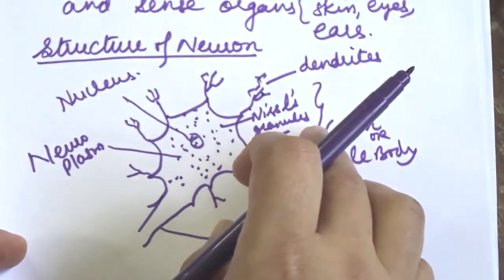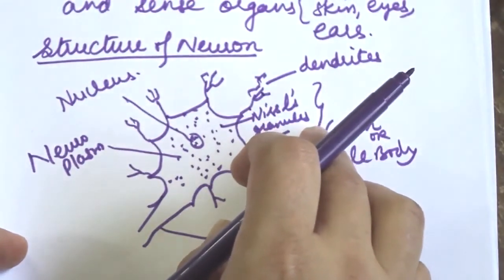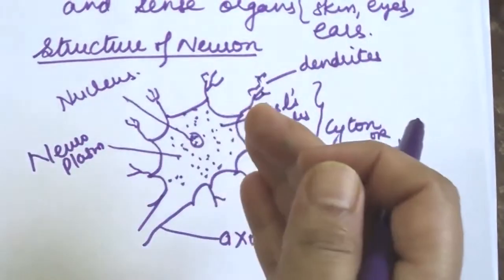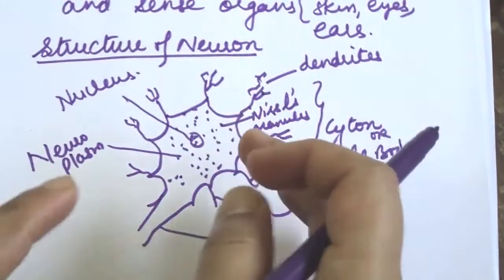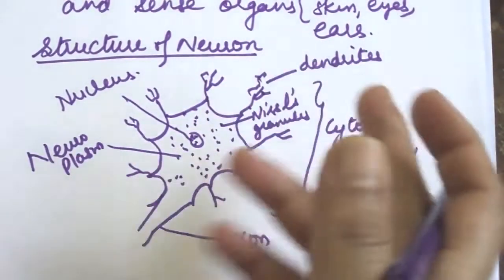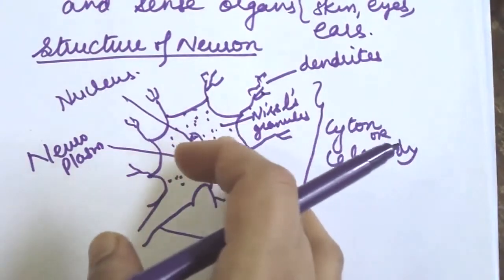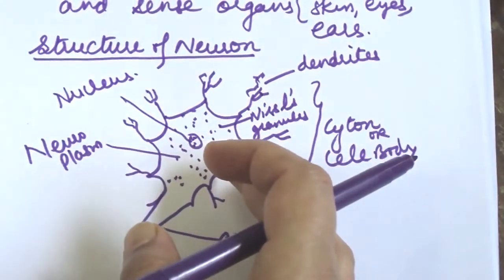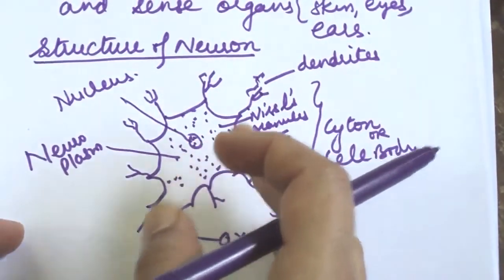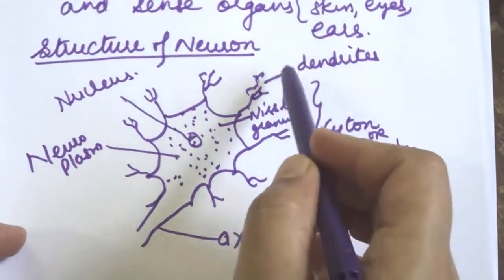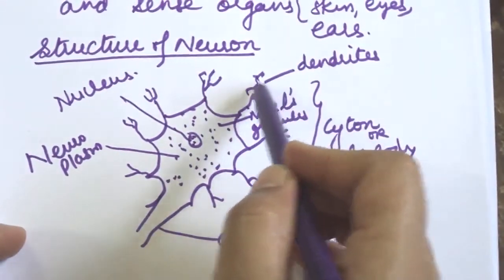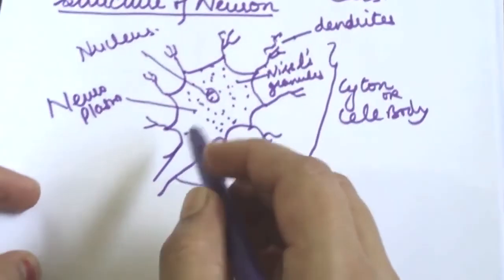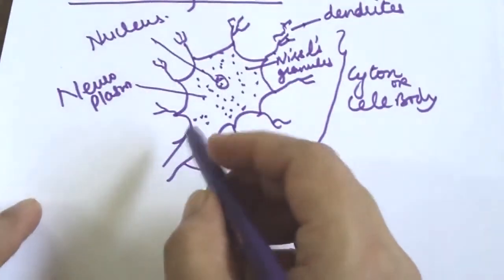Synapse means the junction where a message passes from one neuron to the next neuron. The main function of the dendron is nerve impulse conduction — to conduct the nerve impulse toward the cell body.